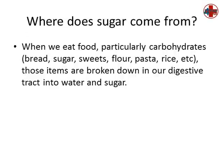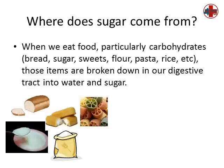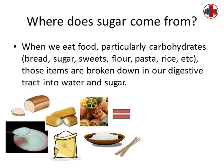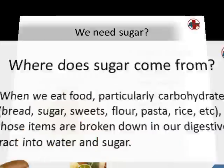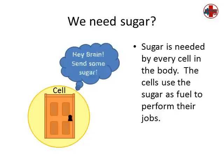When we eat food, particularly carbohydrates such as bread, sugar, sweets, flour, pasta, rice, etc., those items are broken down in our digestive tract into water and sugar. Sugar is needed by every cell in the body.